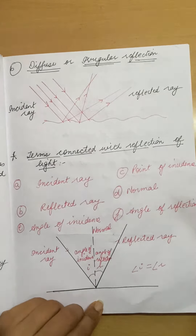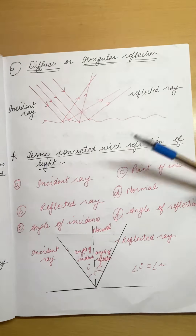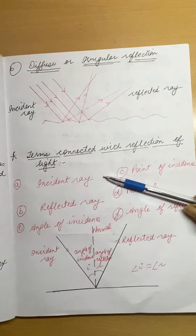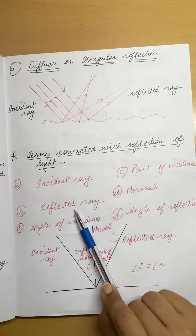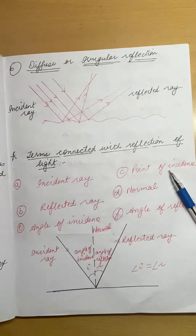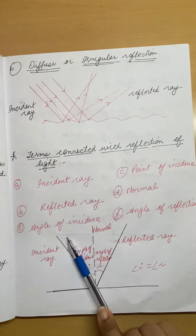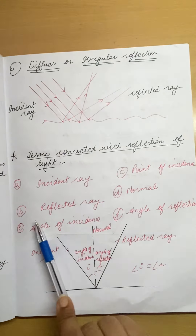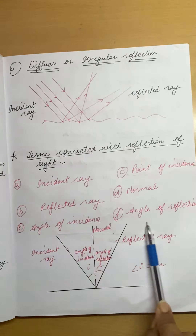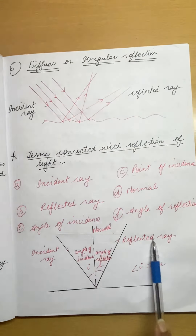Now there are a number of terms and definitions related to light rays and reflection. These are: first, incident ray; second, reflected ray; then there is point of incidence, normal ray, angle of incidence, and angle of reflection. I will explain all six definitions with the help of a diagram.